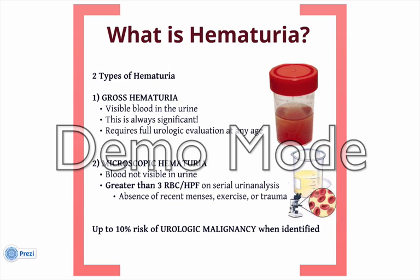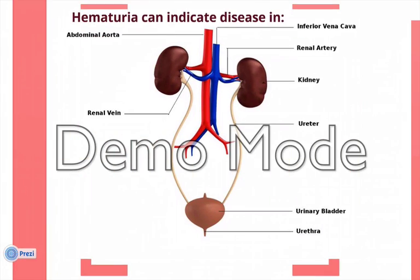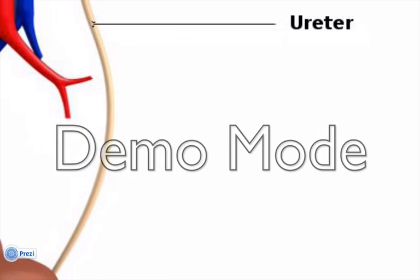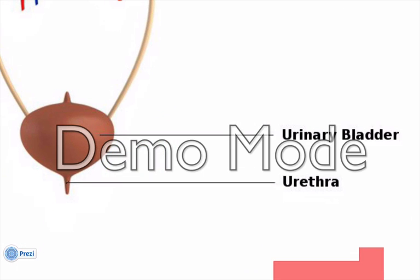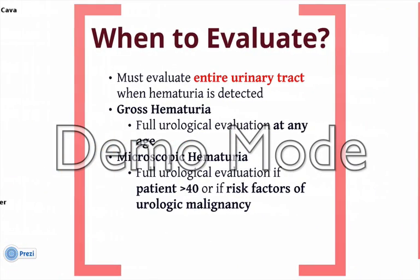When hematuria is identified, it typically indicates an up to 10% chance that urologic malignancy exists in the urinary tract. Blood in the urine can indicate any significant urologic disease from the kidneys, down the ureters, through the bladder, either involving the prostate or also the urethra. When hematuria is detected, we are required to evaluate the entire urinary tract.